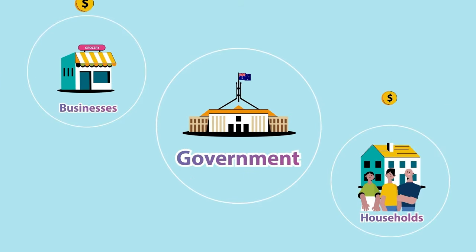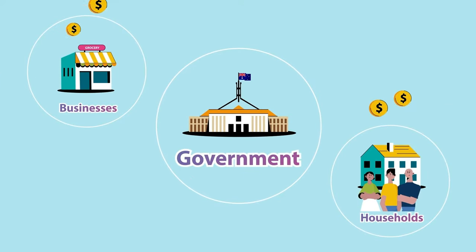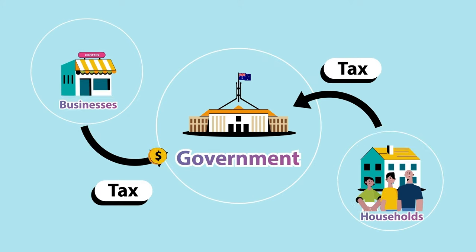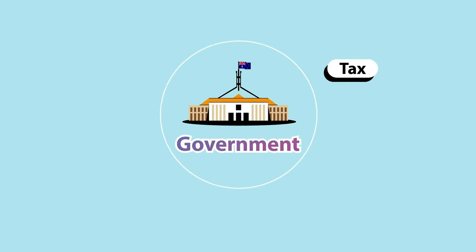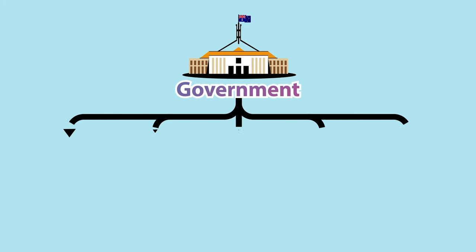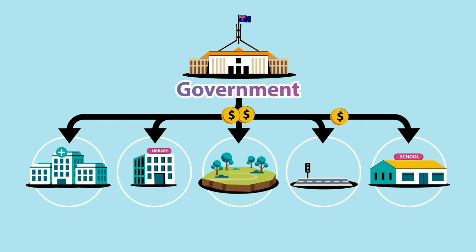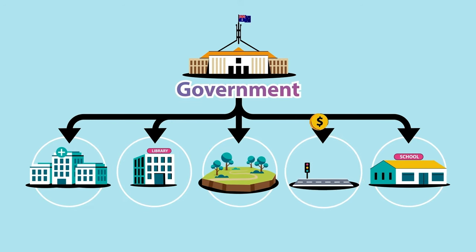Next, we have the government. When households and businesses earn money, they pay a part of it to the government — this is called tax. The government then decides how to use this tax money to help Australians, for example by paying for hospitals, libraries, parks, roads, and schools.